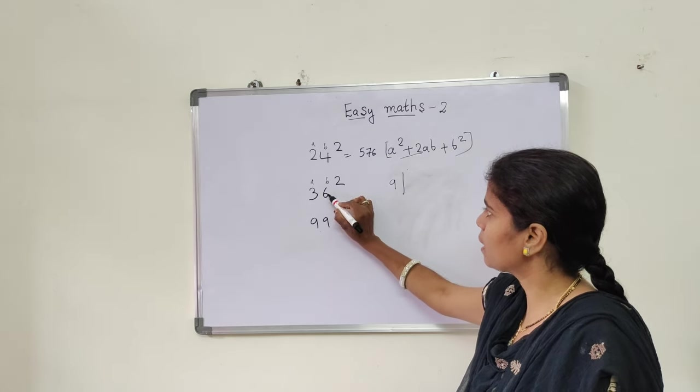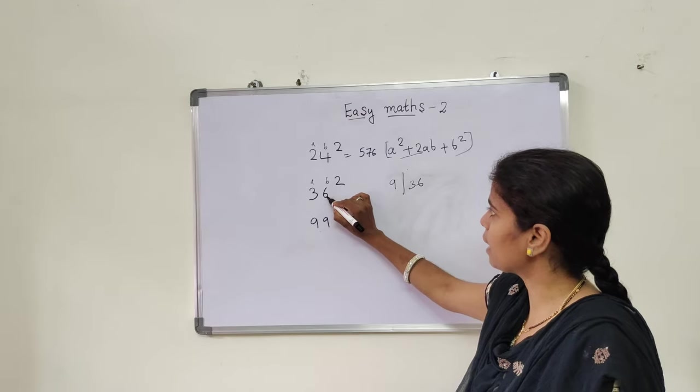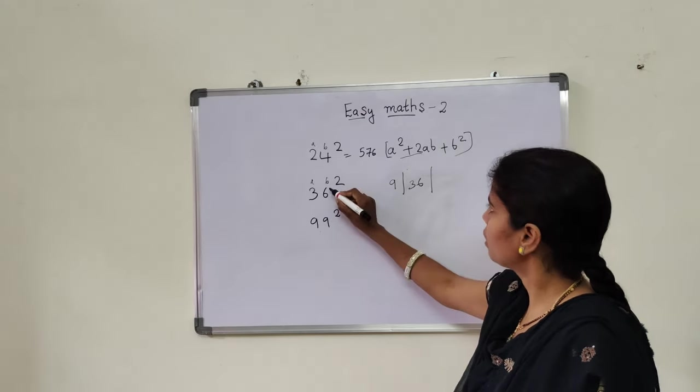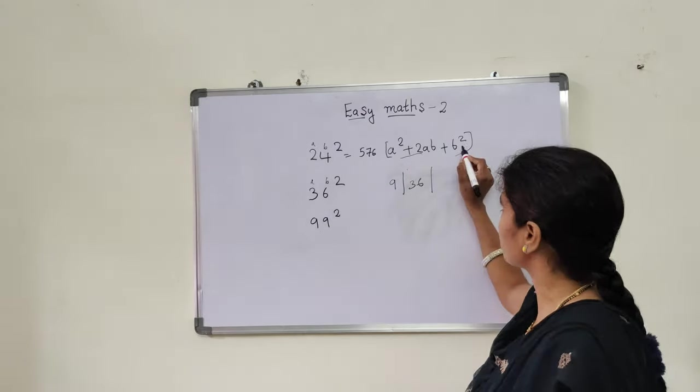2 into 3, 6. 6 × 6 are 36. Put here 36. And 6 × 6 are 36. This is B, no? You should do B square also. Same problem.